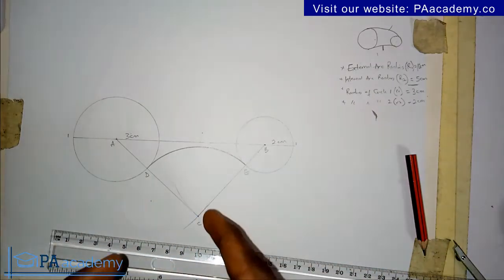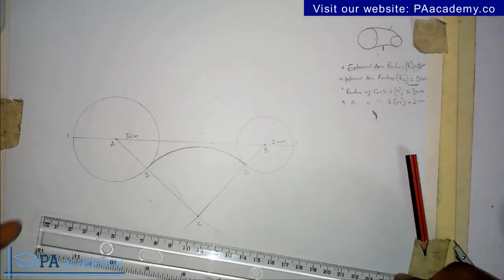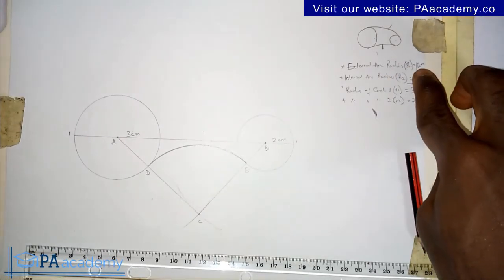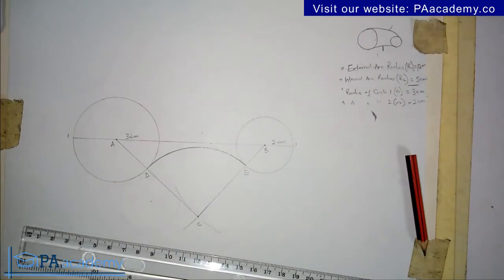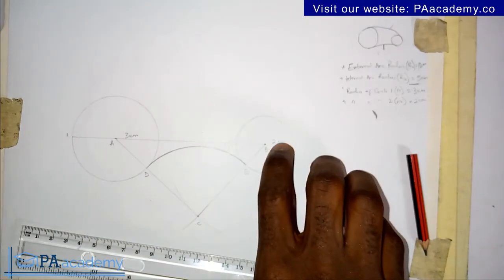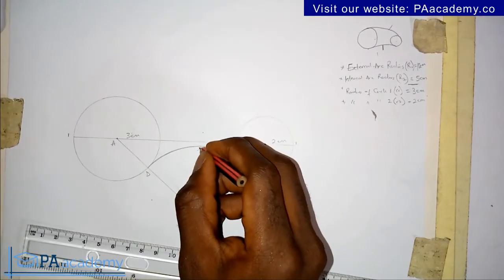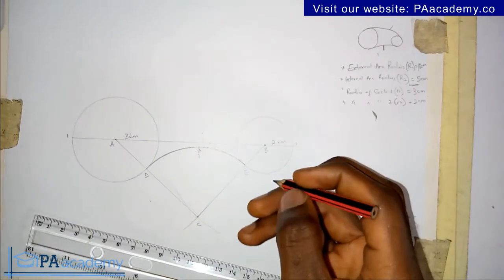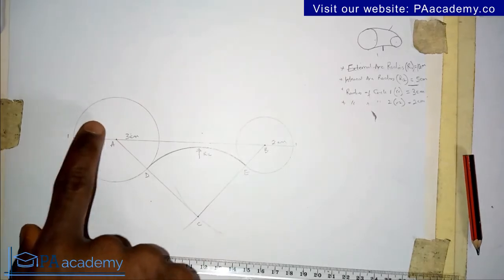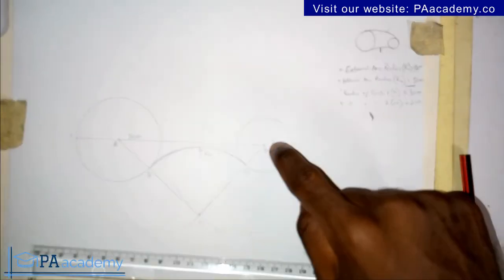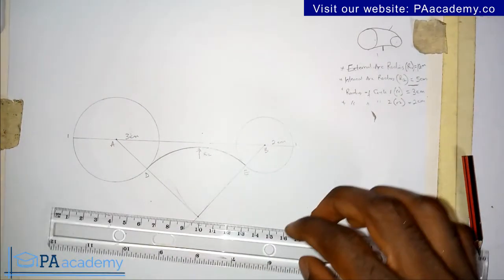Now we are going to do something similar to get the external arc at the top, which uses a radius of 10 cm. For the external arc, we subtract the radius of each circle from 10 cm. Starting from circle 2: 10 cm minus 2 cm gives 8 cm. And for circle 1: 10 cm minus 3 cm gives 7 cm.